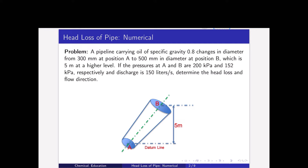Today I will solve one numerical problem on head loss of a pipe. Here is the problem: A pipeline carrying oil of specific gravity 0.8 changes in diameter from 300 mm at position A to 500 mm in diameter at position B, which is 5 meters at a higher level. If the pressures at A and B are 200 kilopascal and 150 kilopascal respectively, and discharge is 150 liters per second, determine the head loss and the flow direction.